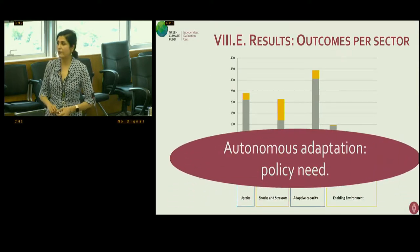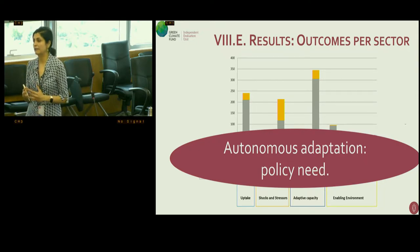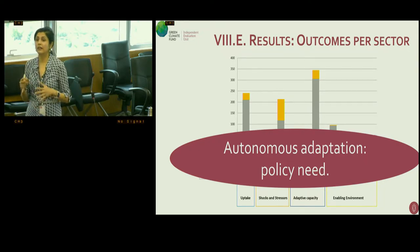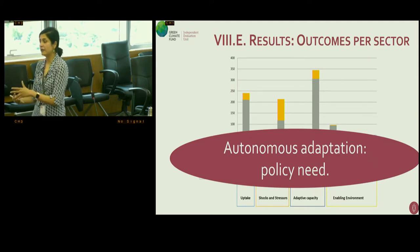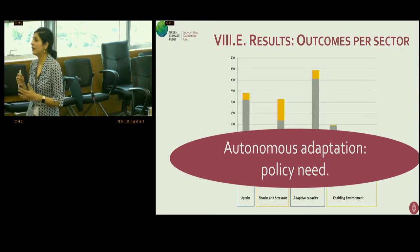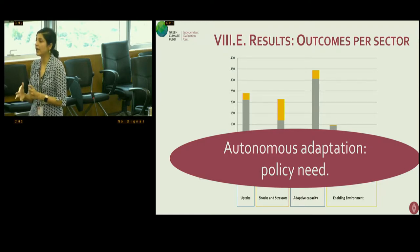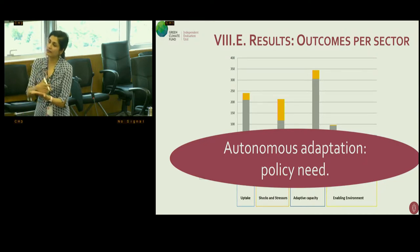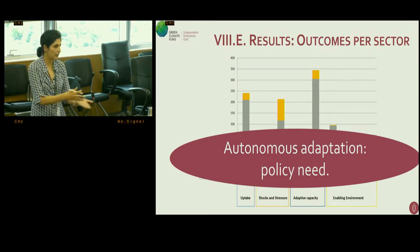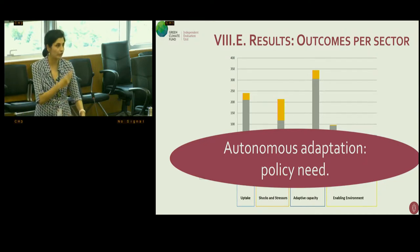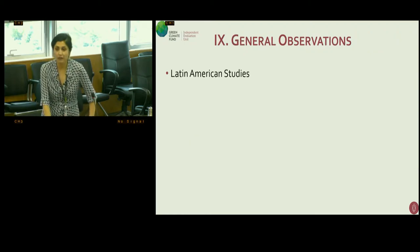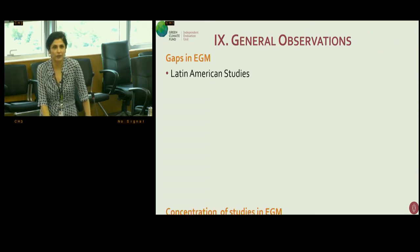One thing we found was that autonomous adaptation has a huge policy need, but we're not finding a lot of evidence in this space. One of the next steps we are planning is to look at which sectors GCF is intervening in — the intervention heat map — and where we can inform those interventions with evidence.